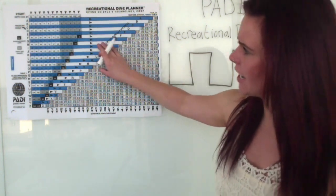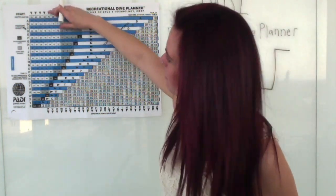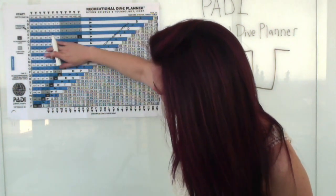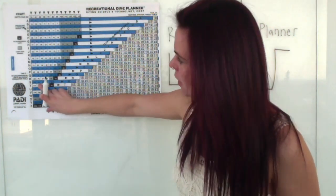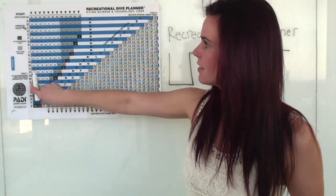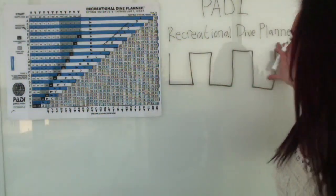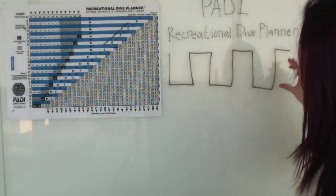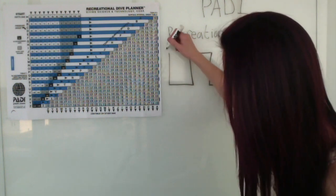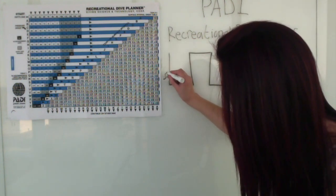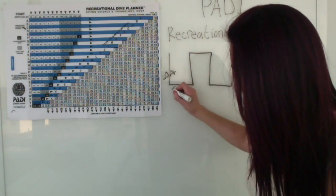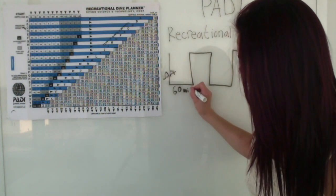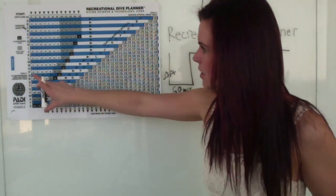So our first dive of the day, let's say we want to dive to 50 feet and we want to stay down for 60 minutes. So our first pressure group will be pressure group S. So normally when you're planning them you use this little model right here. You're staying up here, you dive down to 50 feet and you stay down for 60 minutes. When you come up to the surface, pressure group S.